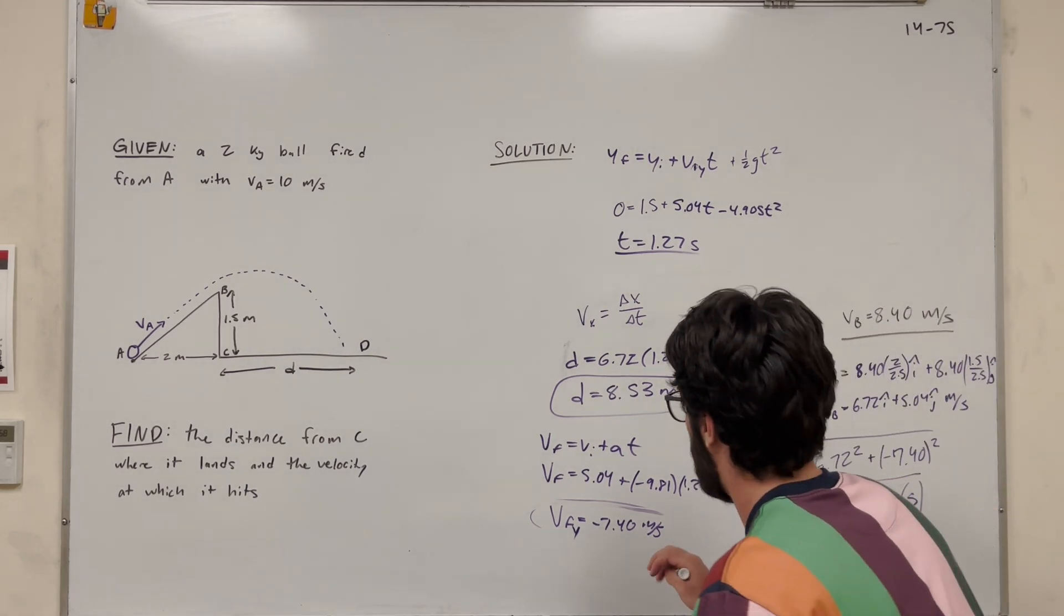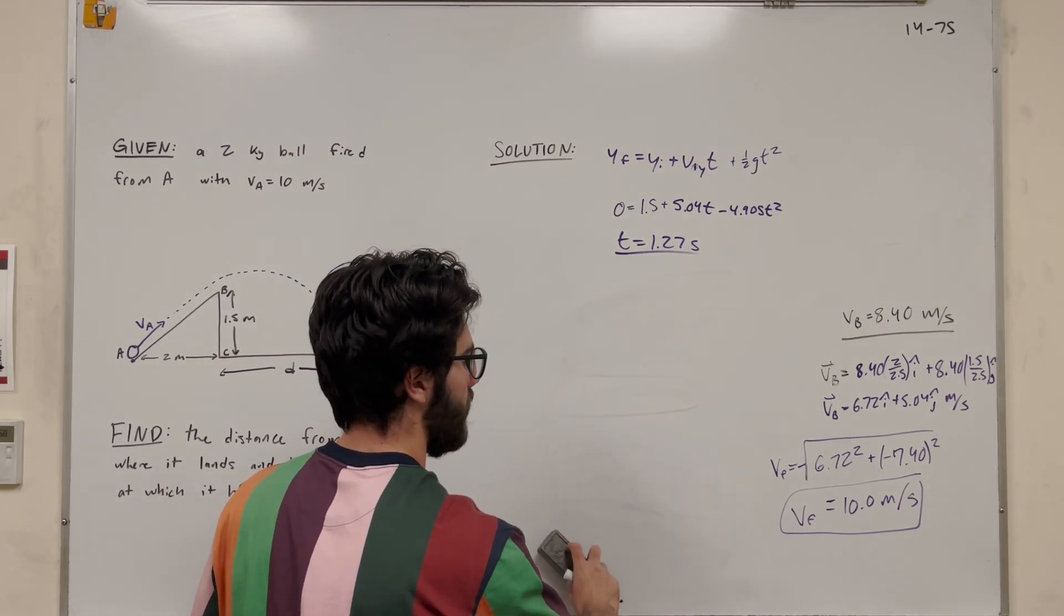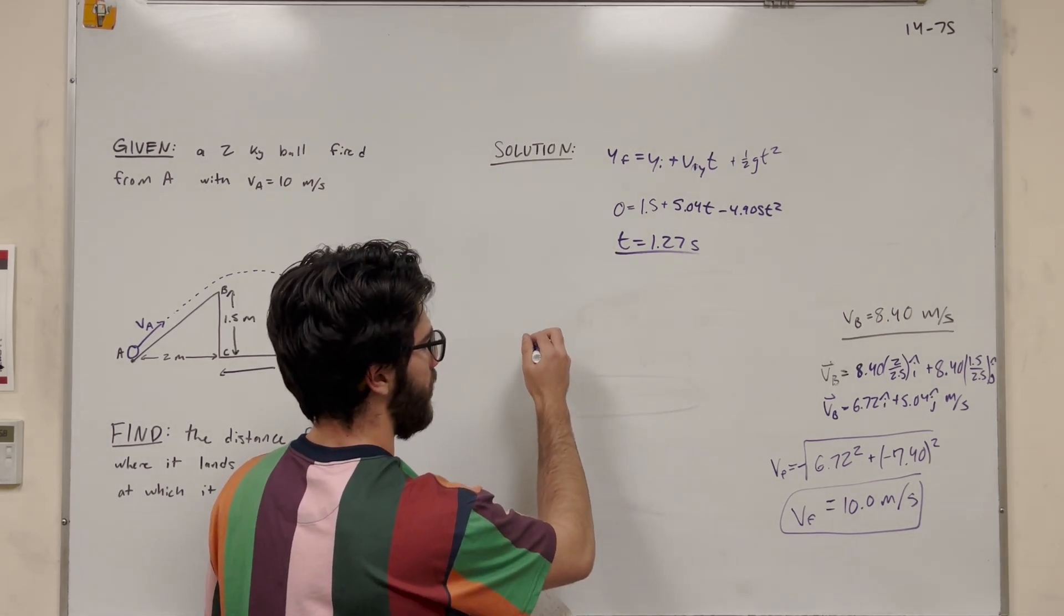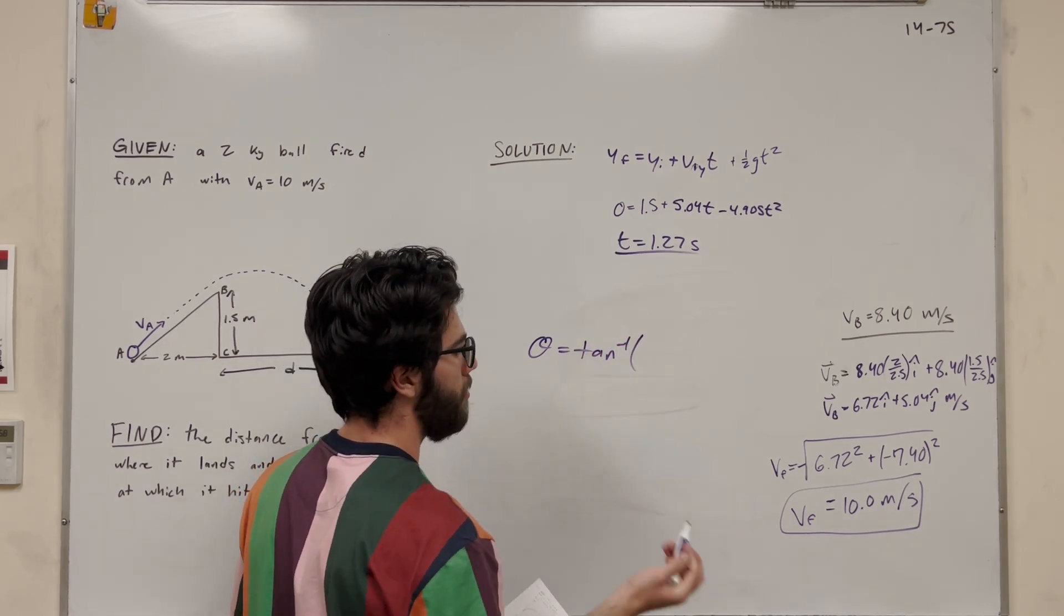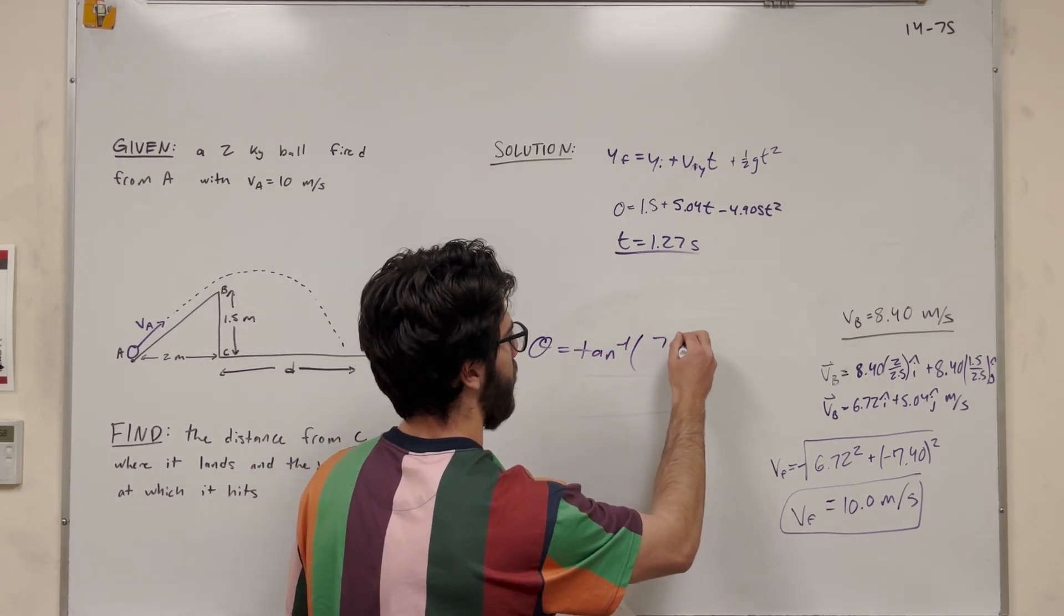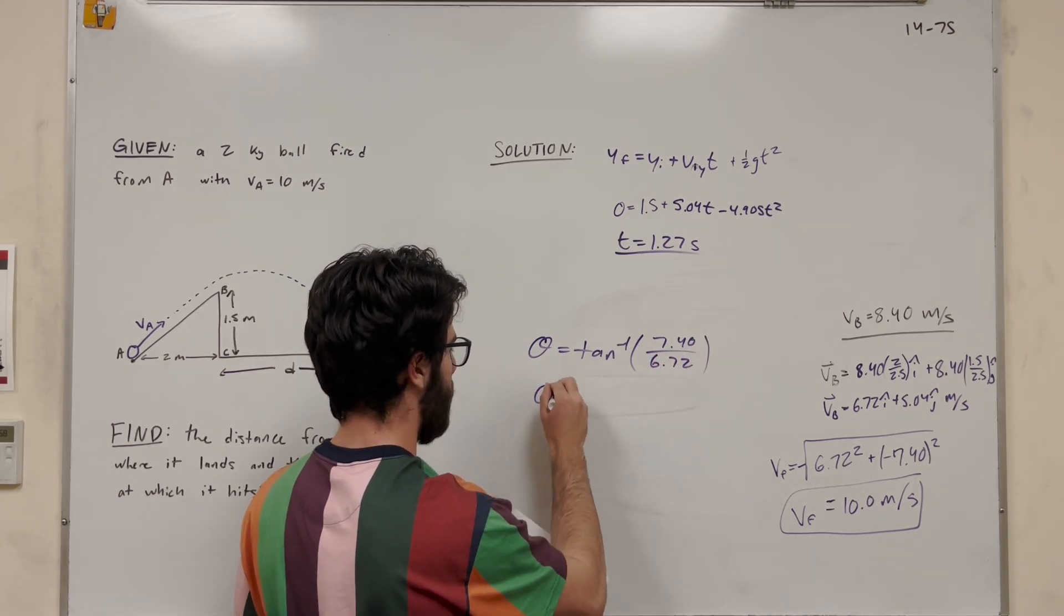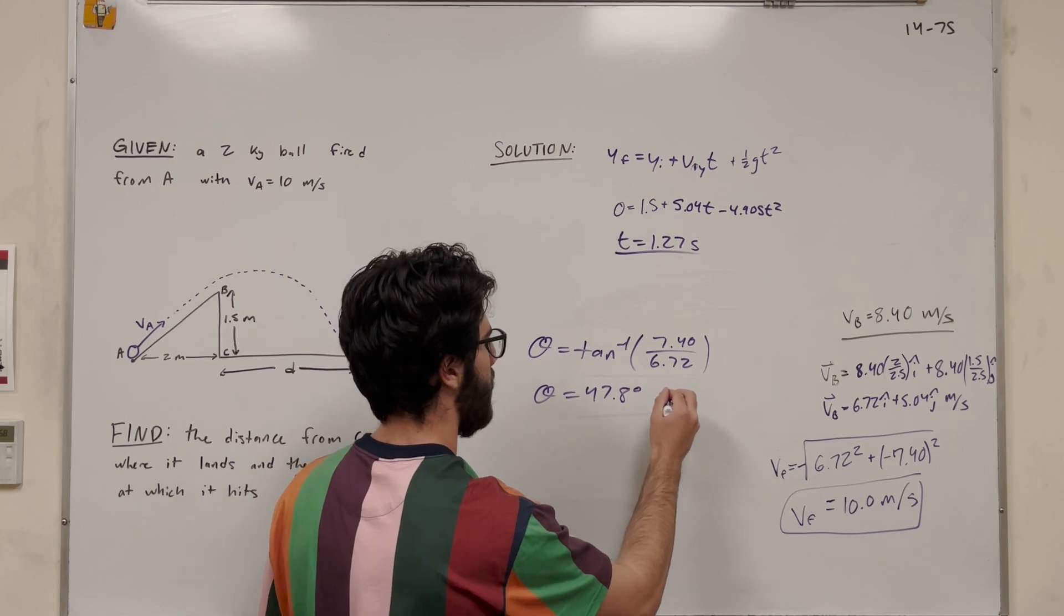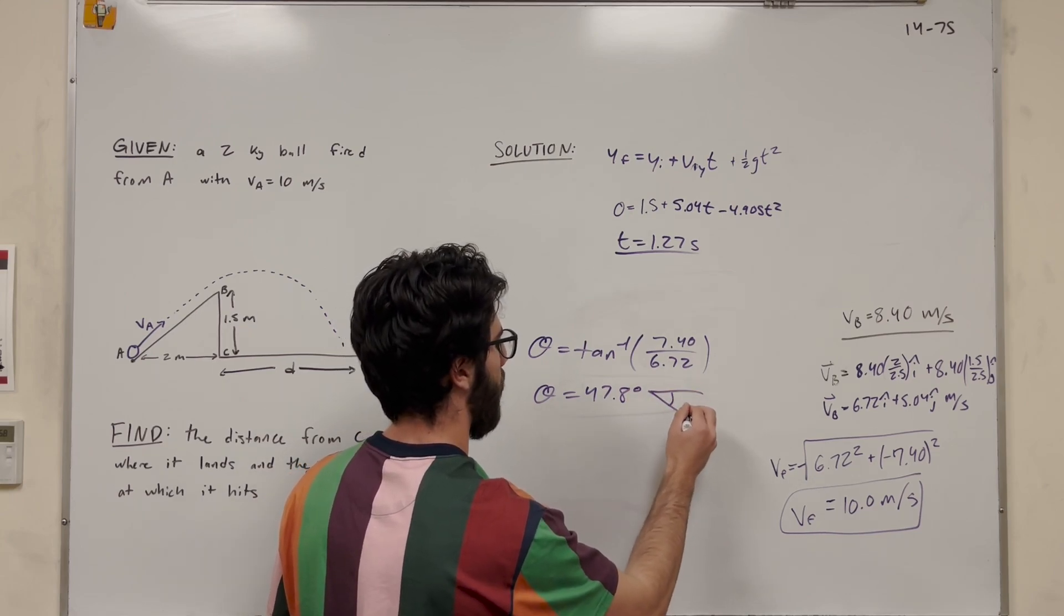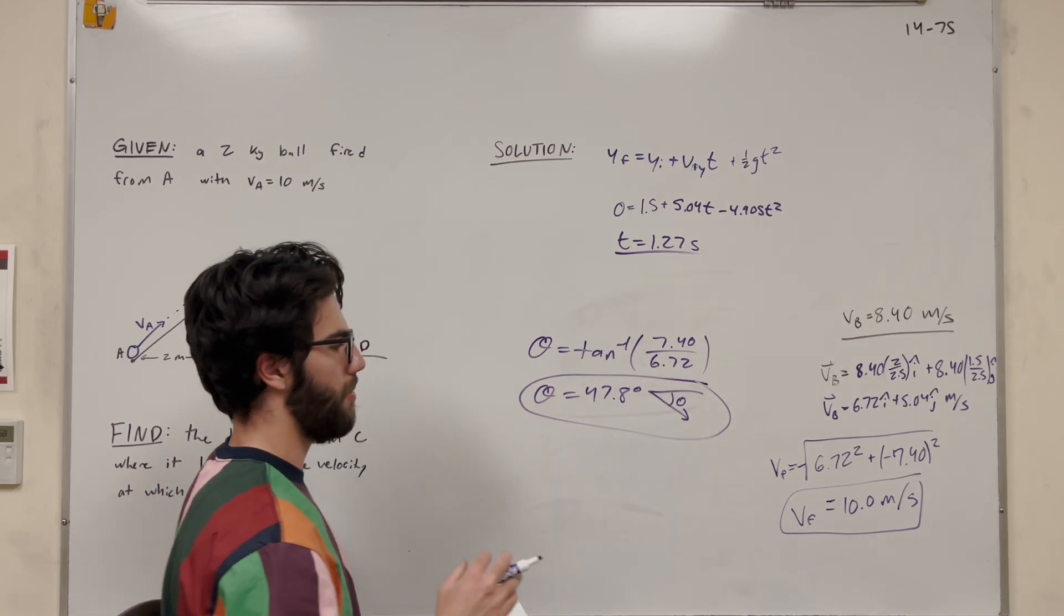And then if we want to find the angle, we're going to use theta is equal to inverse tangent of the y component, which is that 7.40 over the x component, 6.72. And that theta is equal to 47.8 degrees. And we found that angle to be downward from the horizontal.